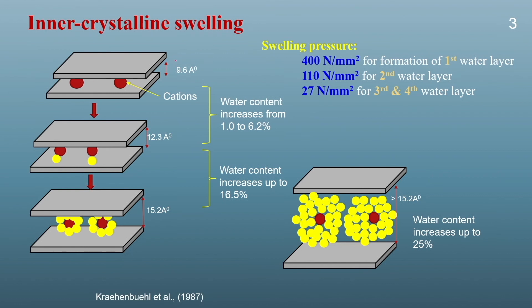In the first stage we have a dry montmorillonite or expansive clay mineral. This is the first layer of the soil mineral and in between they have a cation — sodium, potassium, magnesium, or calcium — mostly in a dehydrated or dry state. The separation between layers is 9.6 angstrom and the water content is very less. Due to the hydration energy of these cations, they will try to absorb moisture.